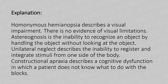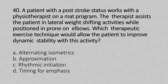Moving to our 40th question. A patient with post-stroke status works with a physiotherapist on a mat program. The therapist assists the patient in lateral weight-shifting activities while positioned in prone on elbows. Which therapeutic exercise technique would you use to allow the patient to improve dynamic stability with this activity? Option A: Alternating Isometrics, Option B: Approximation, Option C: Rhythmic Initiation, Option D: Timing for Emphasis. And the answer is...